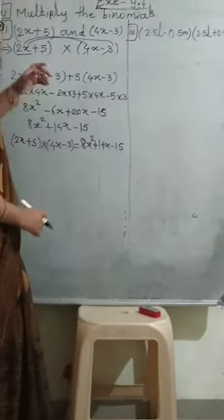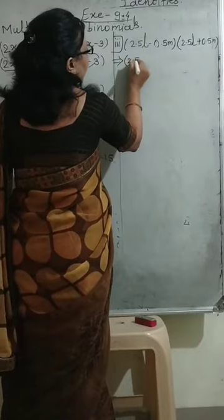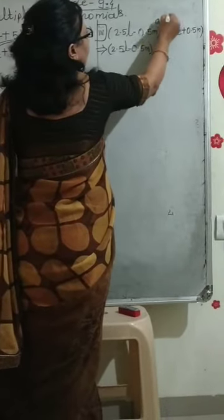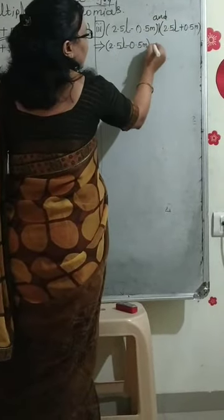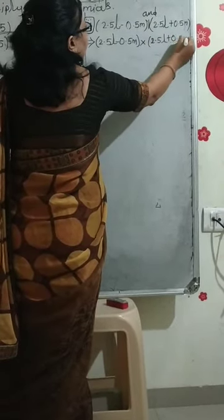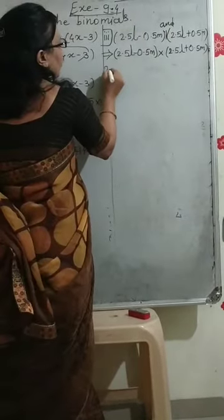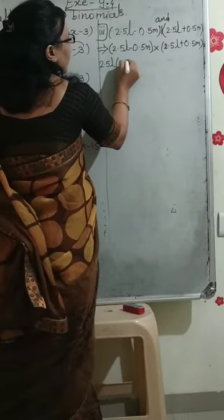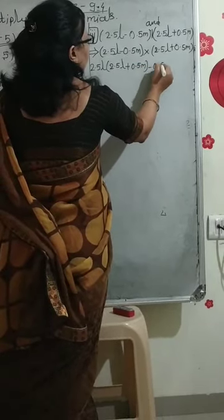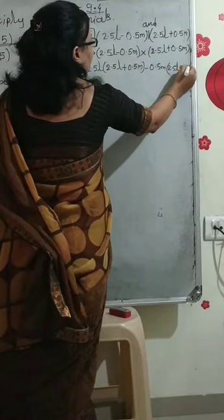Now we take the third example. The question is 2.5L minus 0.5M and 2.5L plus 0.5M. There is a multiplication sign in between. Same as the first example: we will first multiply by 2.5L into the bracket 2.5L plus 0.5M, then minus 0.5M into 2.5L plus 0.5M.